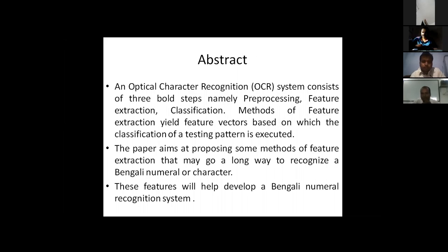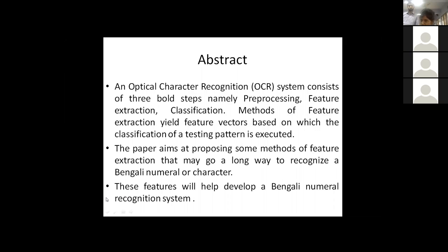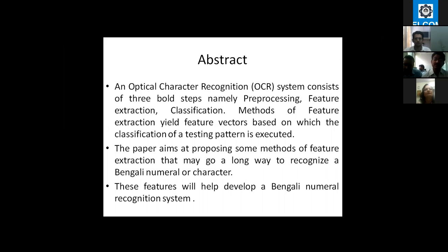The paper aims to build a Bangla numeral recognition system, but so far we have completed partial work, which is being presented here. Any optical character recognition system contains three main stages: pre-processing, feature extraction, and classification. By means of this paper we are going to deal with only pre-processing and feature extraction. The main aim is to propose methods that require no cumbersome calculation, so that processing time could be reduced and the system could be considered real-time.